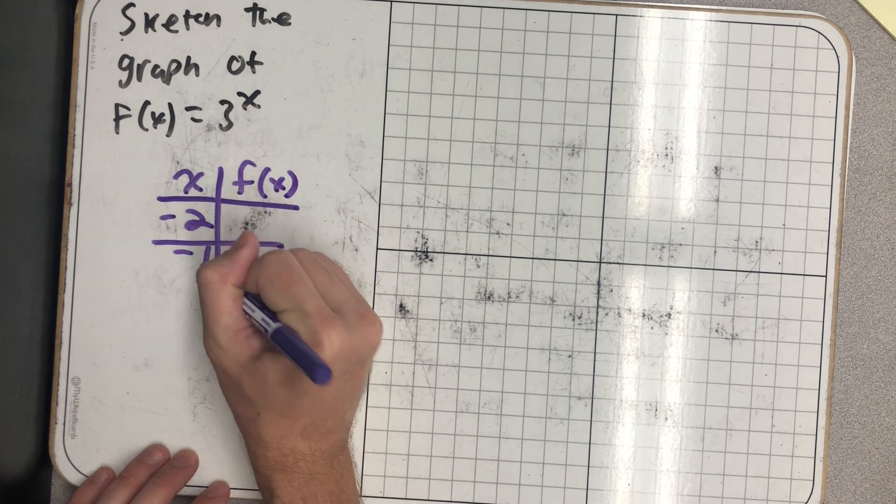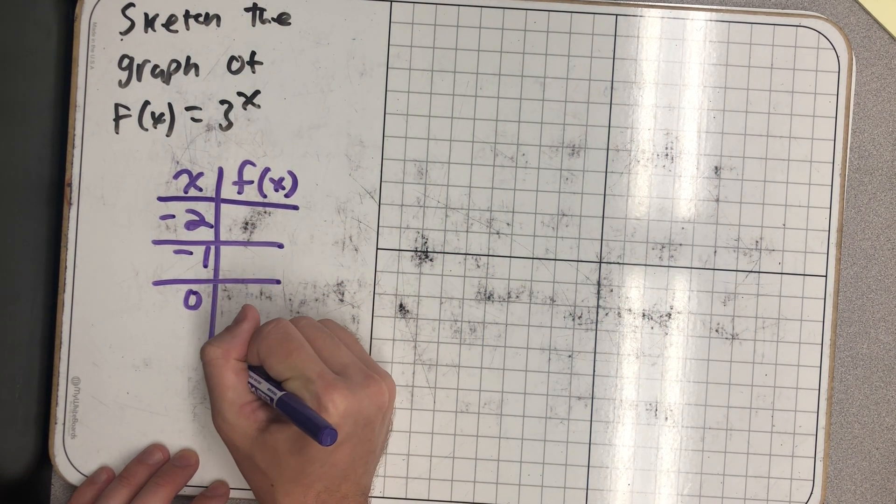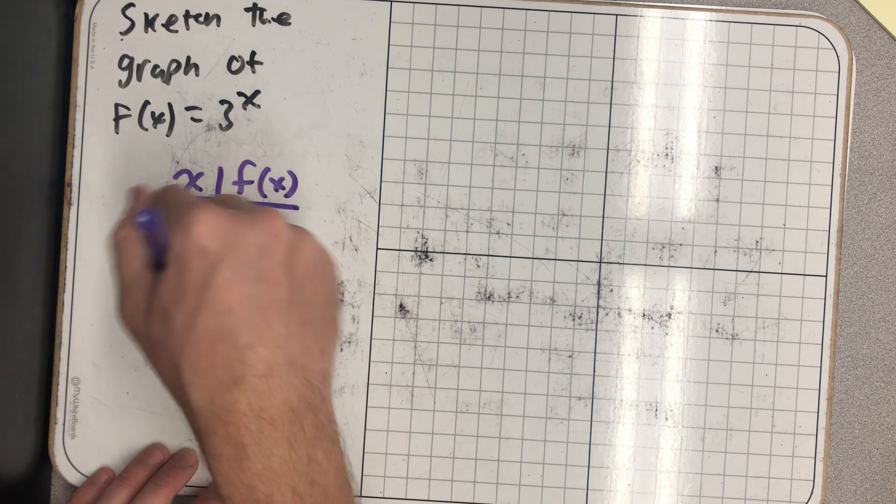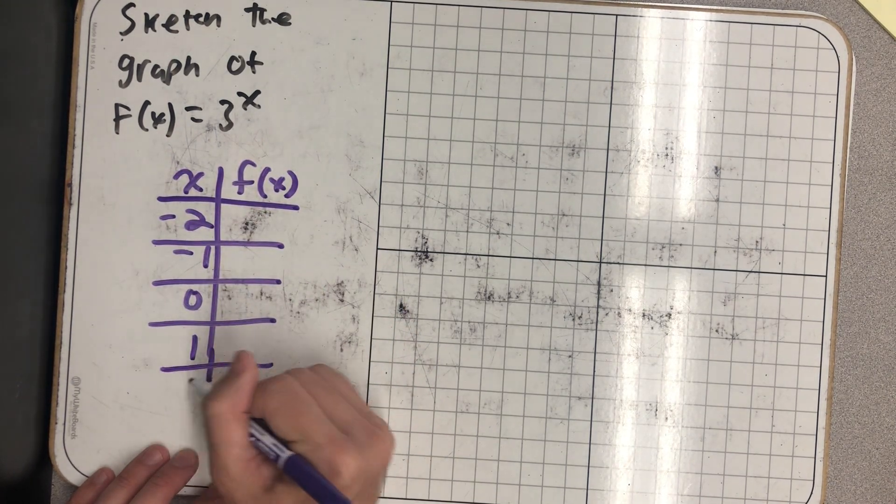I'm just going to pick some x values that include a lot of the possibilities. I want some negative things, I want to include 0, and I want some positive things.